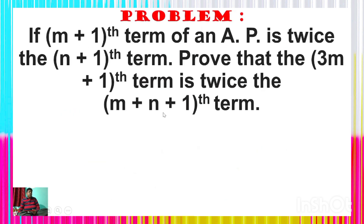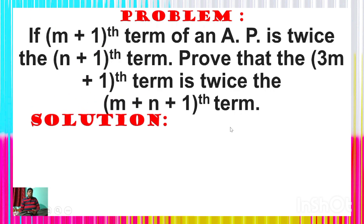Here is a very important question: if the (m+1)th term of an AP is twice the (n+1)th term, then prove that the (3m+1)th term is twice the (m+n+1)th term. Look at the solution.